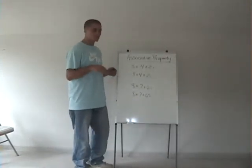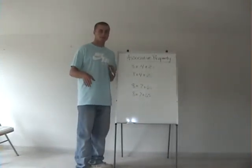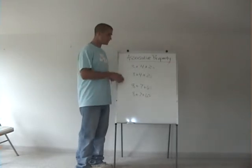The associative property is like the commutative property in that it only works for multiplication and addition.